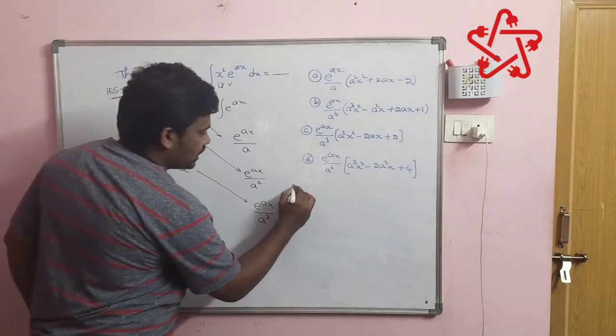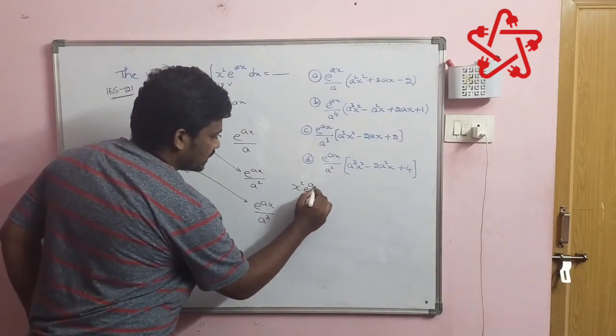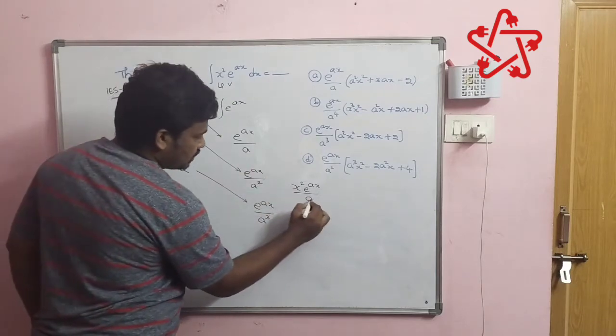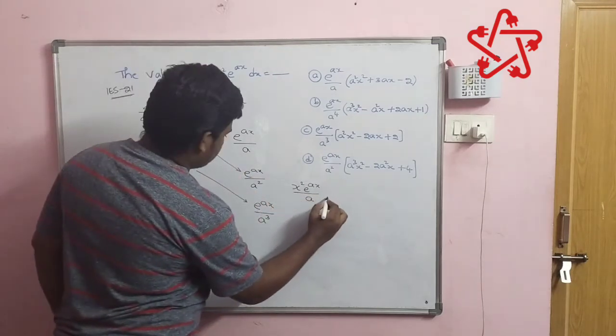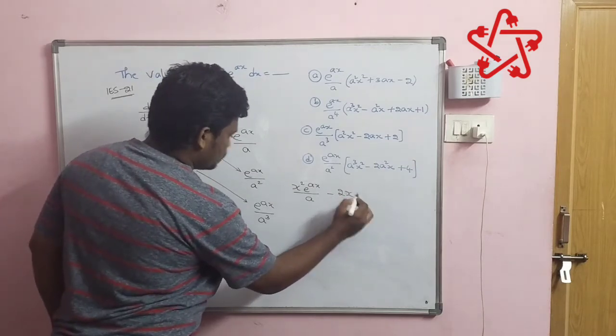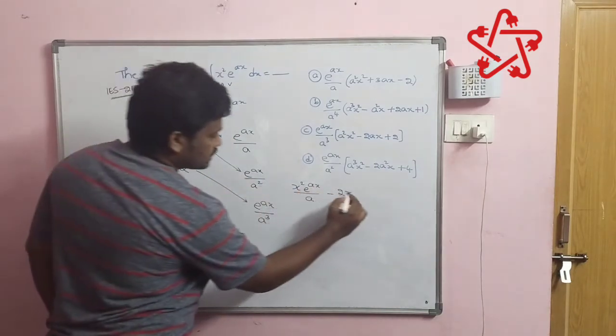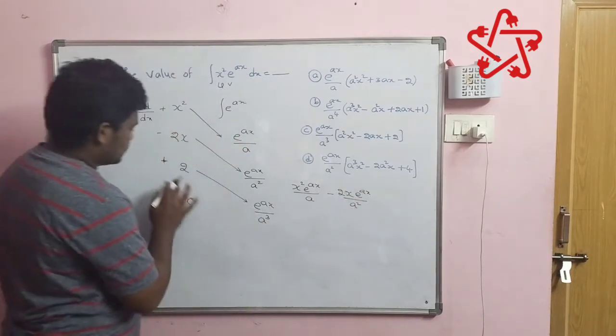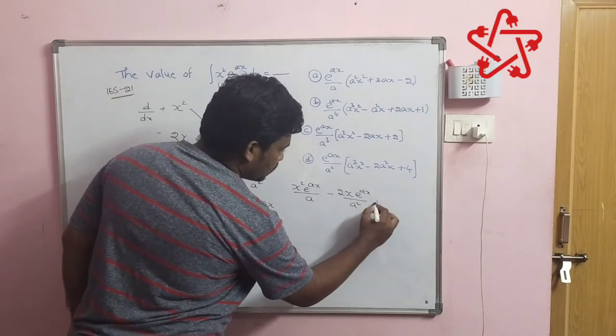Now multiply: x square into e power ax divided by a, minus 2x into e power ax by a square, plus 2 into e power ax by a cube.